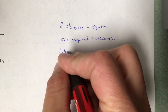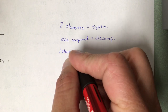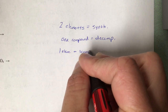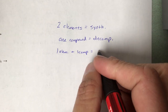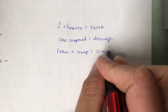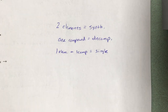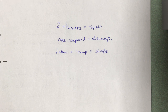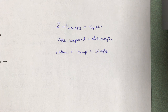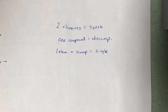If I give you one element and one compound, then that is going to be single replacement. What you're going to do there is swap out like for like. So if I give you a metal as the element, you're going to swap it for the metal that's in the compound. If I give you a non-metal as the element, you're going to swap it out for the non-metal in the compound. That's what I mean by swapping out like with like.